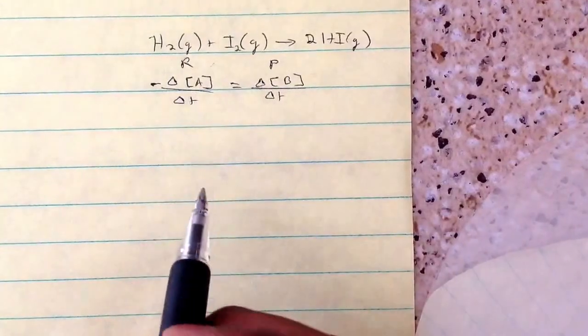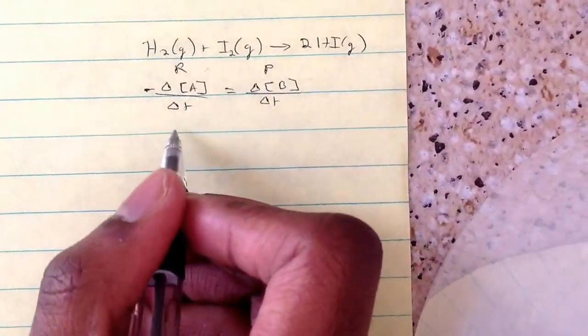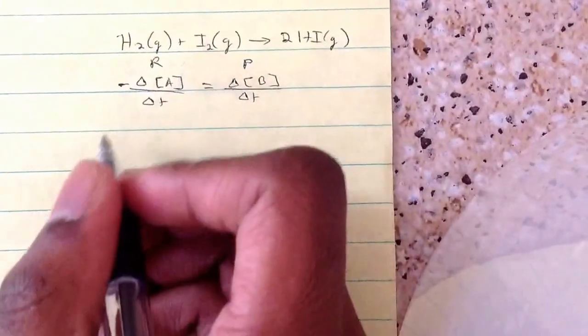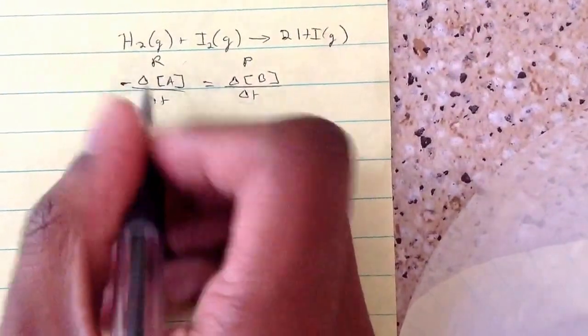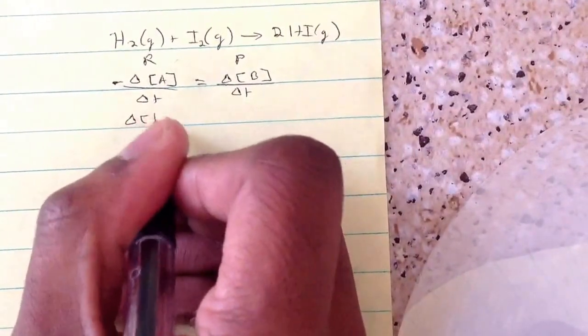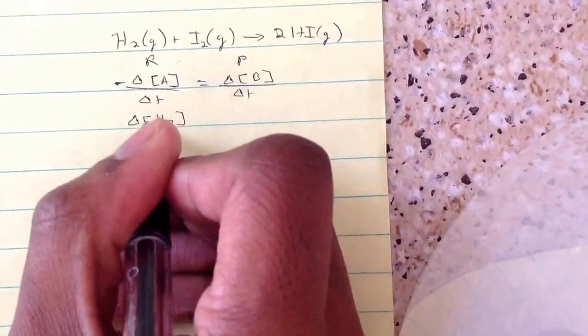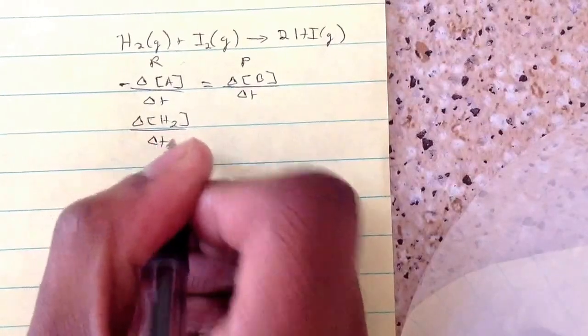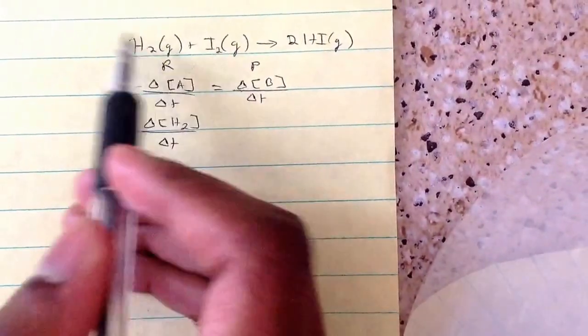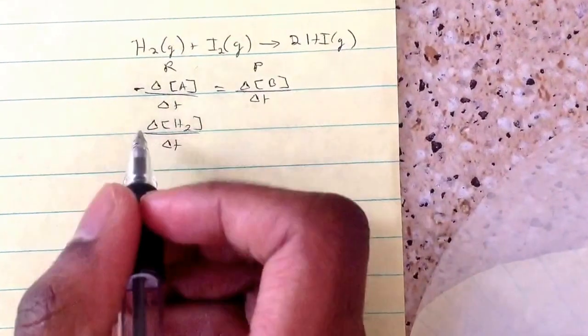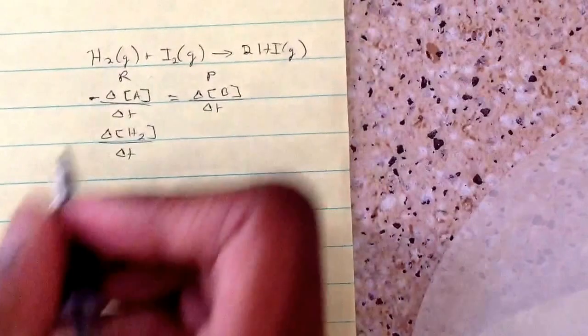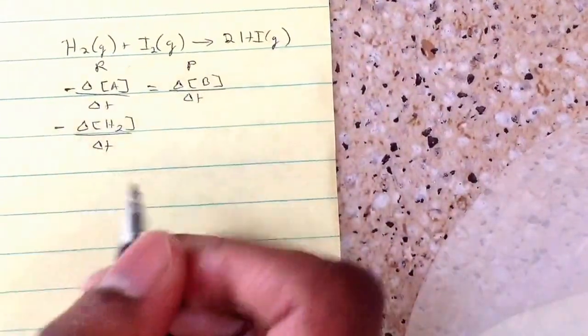So what's going to happen here is that we're going to write this expression. First what you're going to do is you're going to take the change of H2 over change of time, and then you first look at if the equation is balanced, and you look at the coefficient, and the coefficient is just going to be 1 over 1, so you don't write that. But since it's on the reactant side, it's going to be negative.